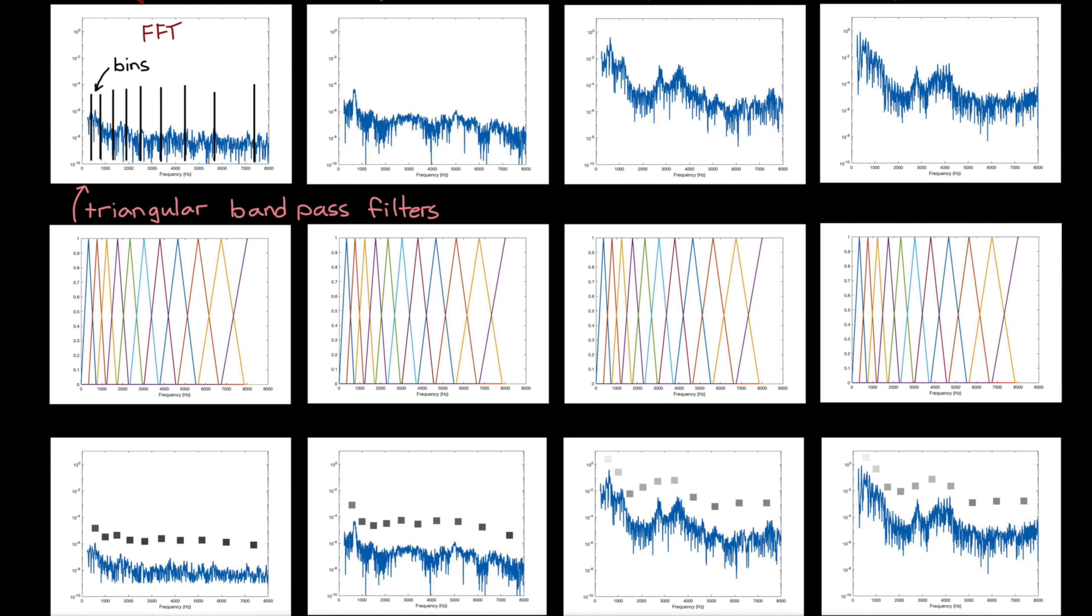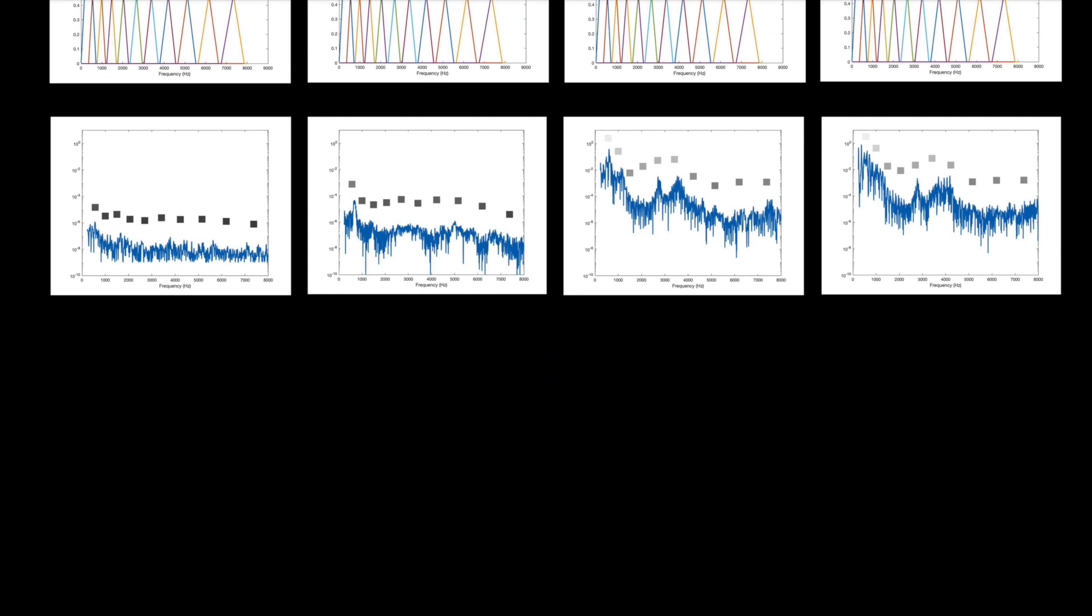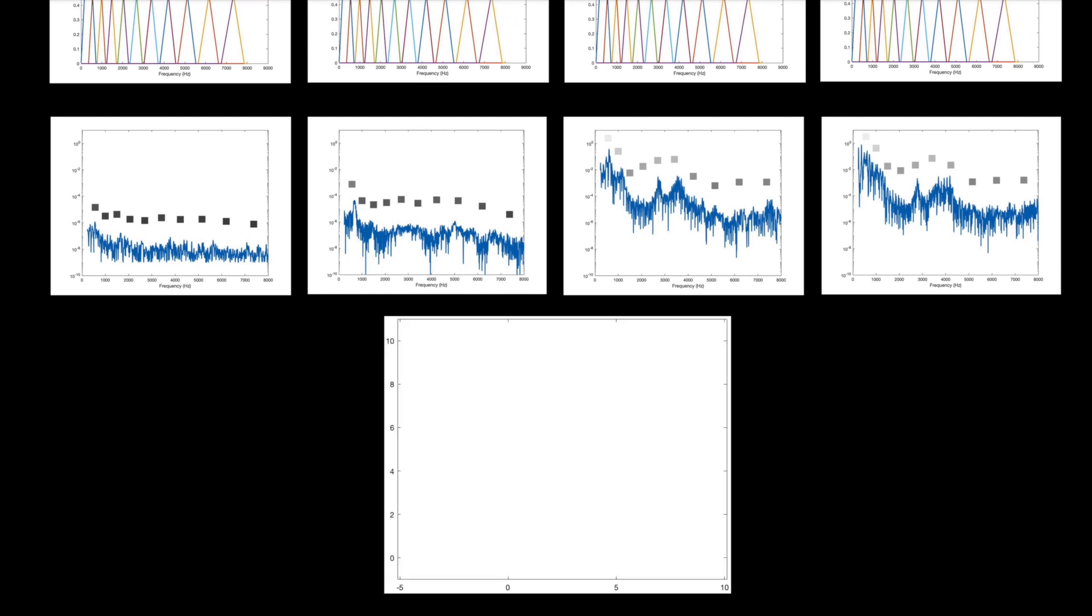And now that we have all of this information by bin and window, the last thing to do is to put it all into a single image. The first window is placed on the left side of the image with the lowest frequency bin on the bottom, and then we place the next window beside it, and the next, until we've gone across the entire signal and we've created a spectrogram. Which is pretty cool, right? I think it's kind of neat that we can create an image of audio signals like this.